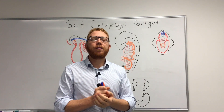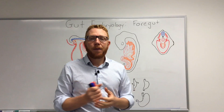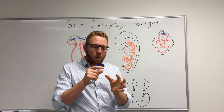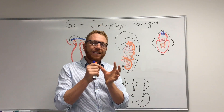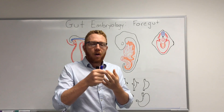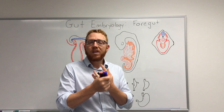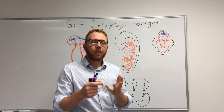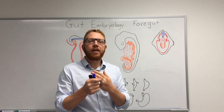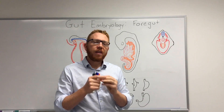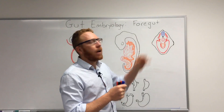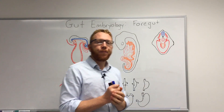In terms of learning outcomes for today: first of all, where does the foregut start, where does it end anatomically, what's the blood supply of the foregut, and what are the main diverticula of the foregut. Those are the main learning outcomes I want you to take home today.